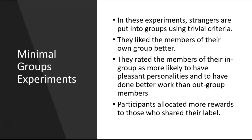Researchers think about this not just in terms of the good feelings we get from valuing our own group more, but also dissonance reduction. If you have good feelings toward your group, maybe you should be giving preference to your own group. If you don't do that, it causes dissonance. The norm is 'you and your group first, out-groups later.' Then dissonance kicks in when you look at the out-group and ask, 'Why am I being unfair?' There must be a good reason — it's because they're less likable, have lower work ethic, do worse work, so they deserve fewer rewards and more punishments.